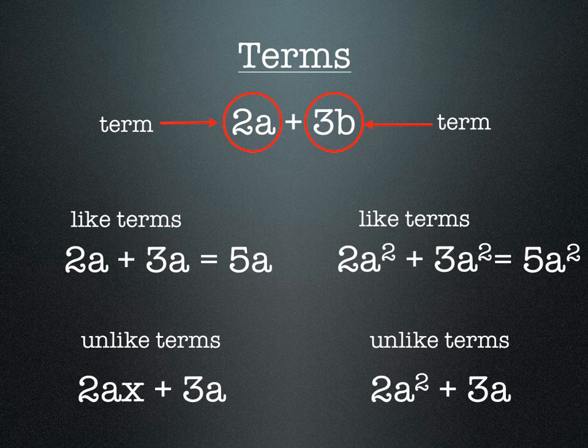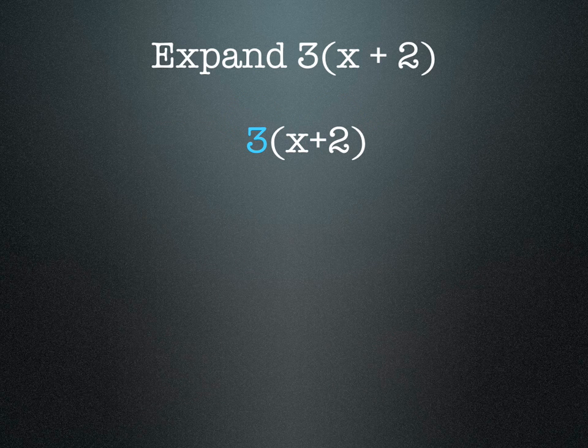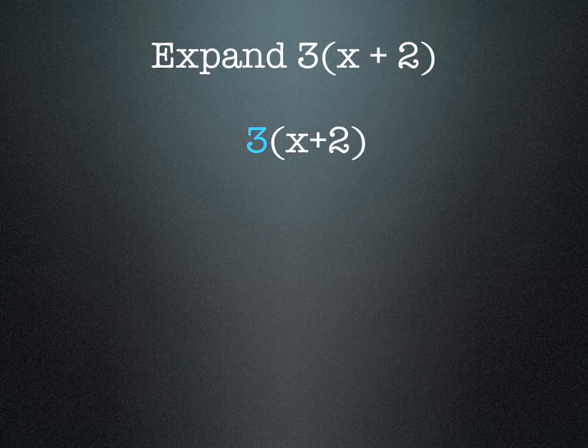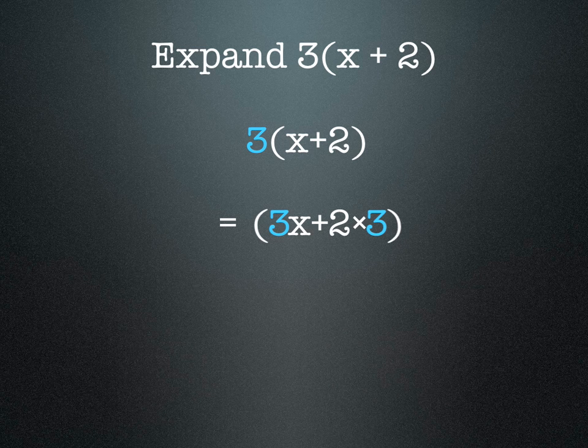Okay, so say we're asked to expand 3(x + 2). That means that the 3 needs to be multiplied by both terms inside the bracket. So 3 needs to be multiplied by the x and also by the 2. So we get 3x + 2 × 3, or 3x + 6. So we've expanded that expression.